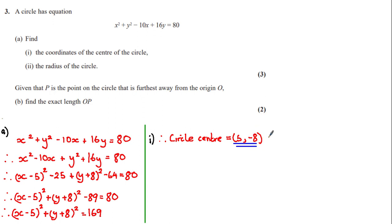When finding the center of the circle given the equation in this form, you simply choose the coordinates of x and y which would set the corresponding brackets equal to zero. In this case it's 5 and minus 8.